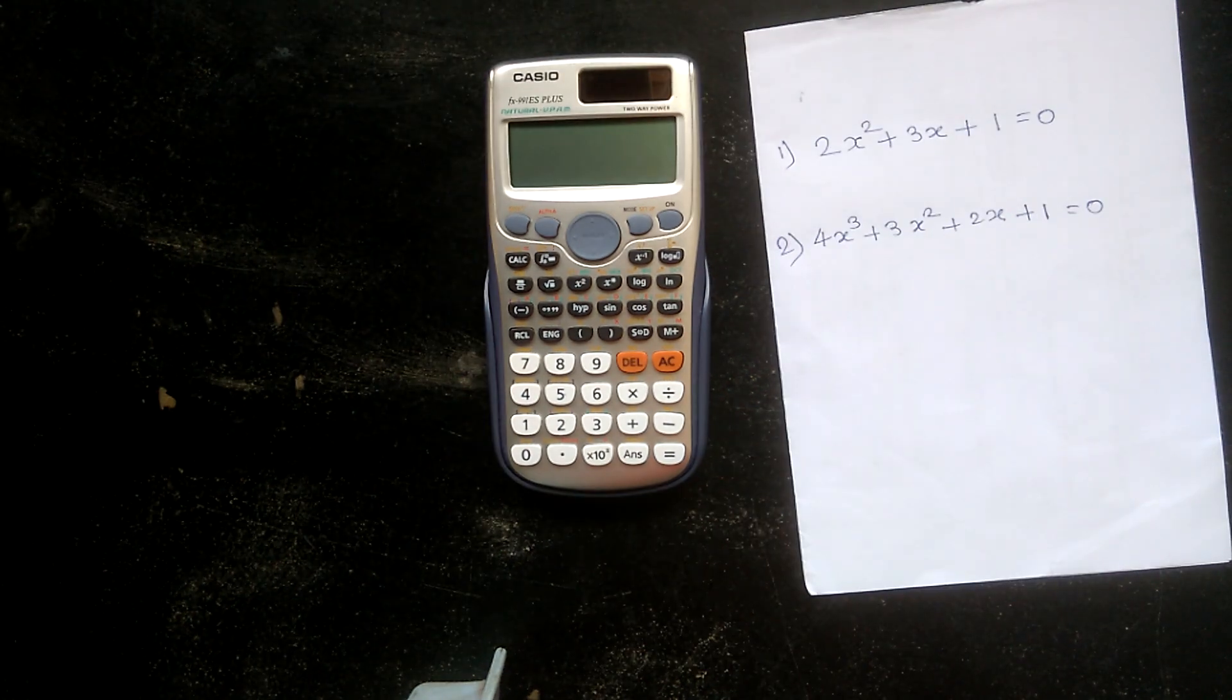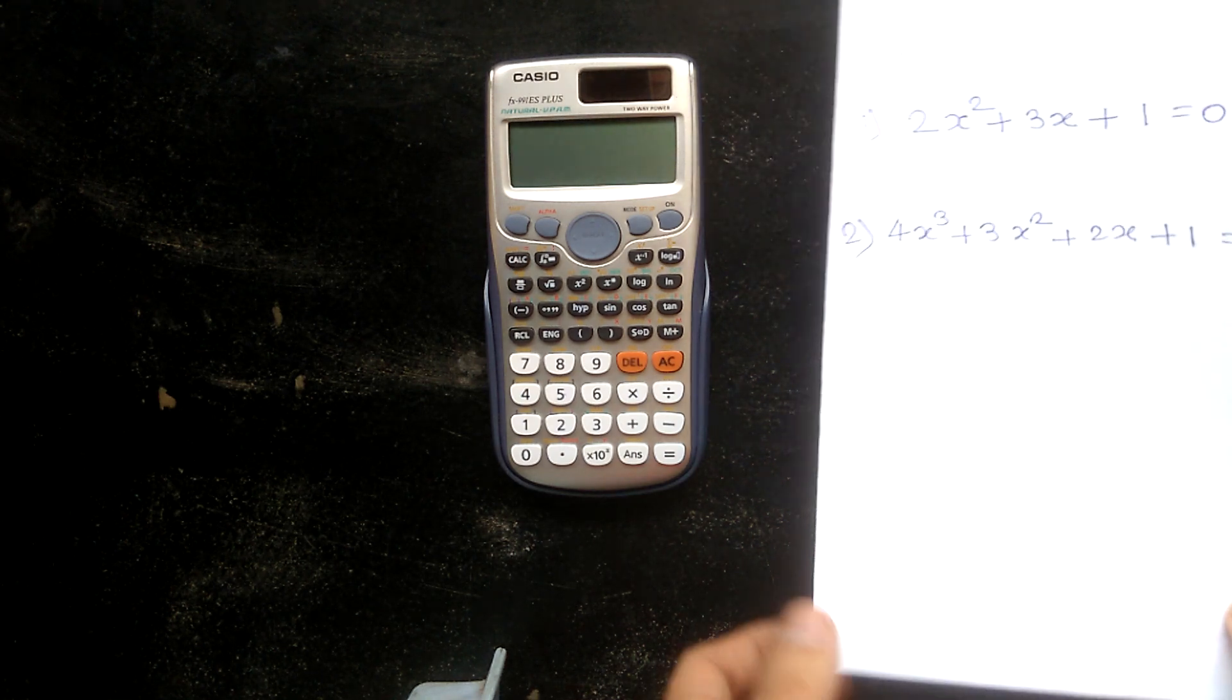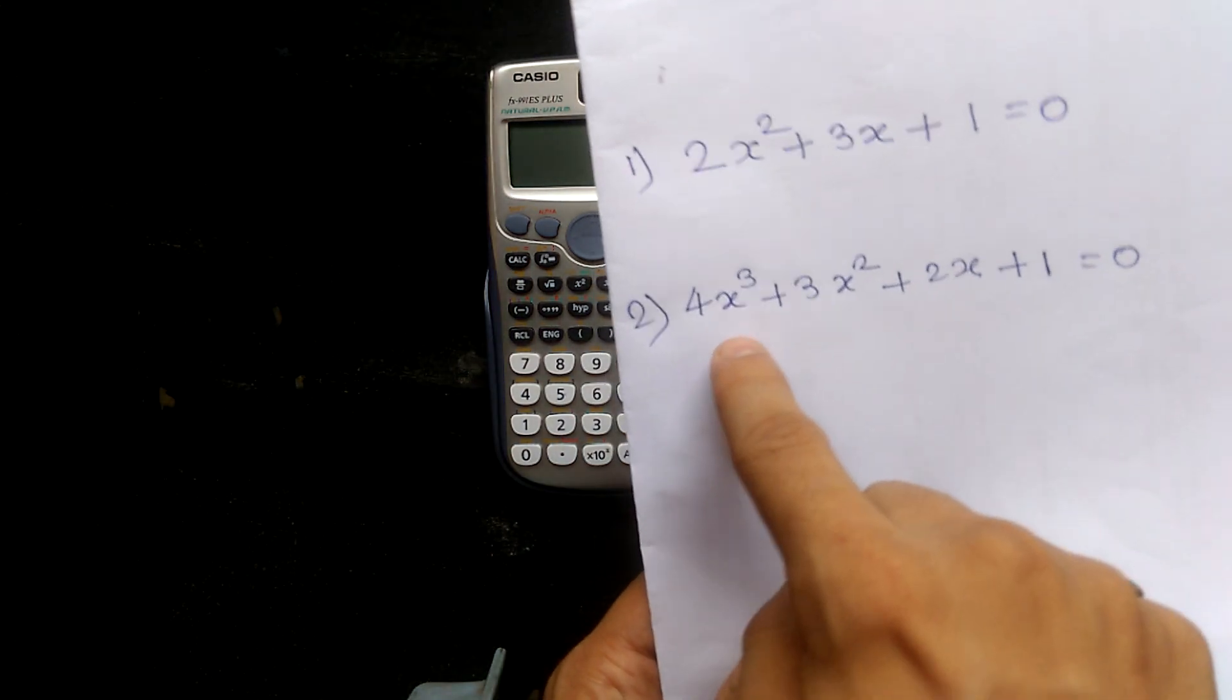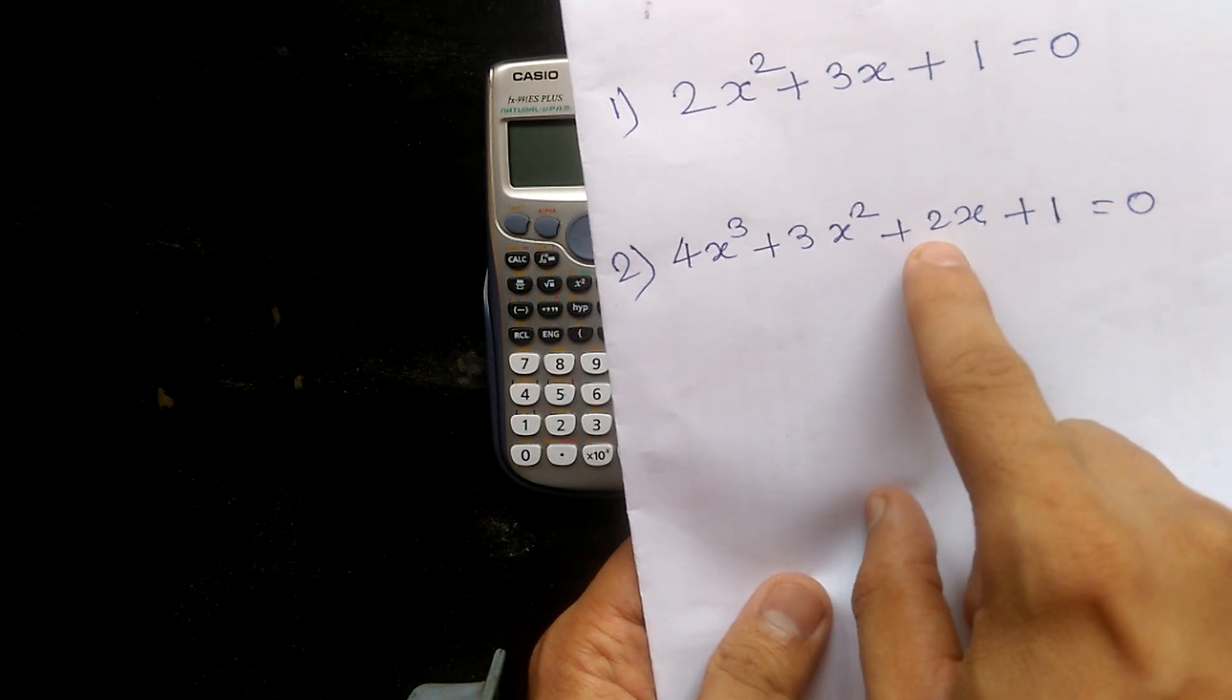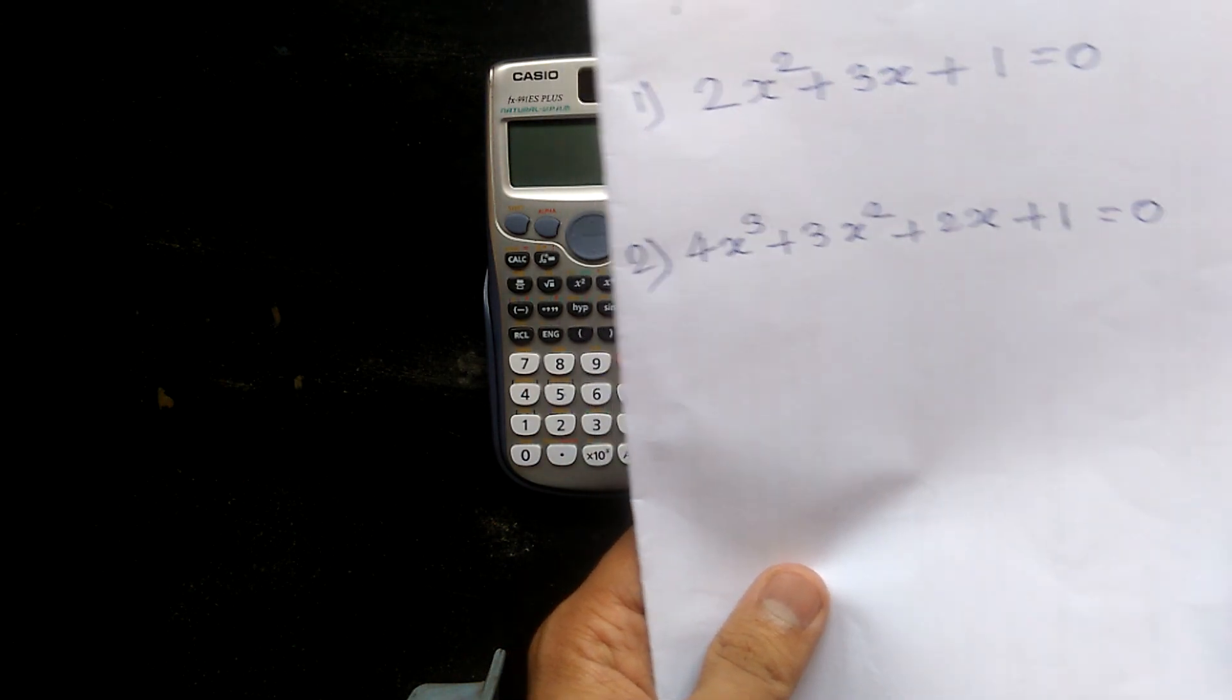Hi and welcome to the channel. Today we are going to see how to solve a cubic equation. I have taken one simple cubic equation as 4x³ + 3x² + 2x + 1 = 0.